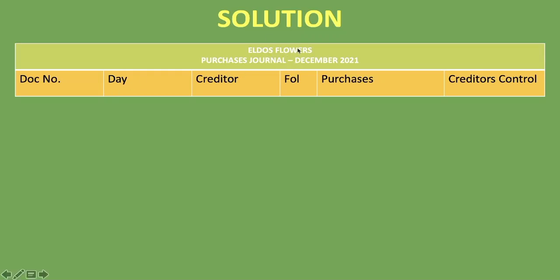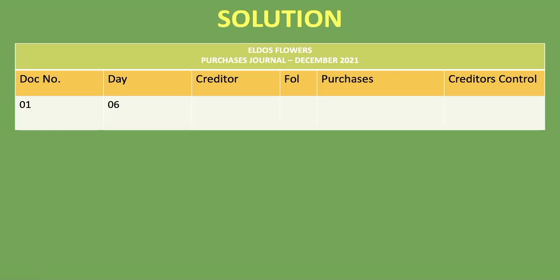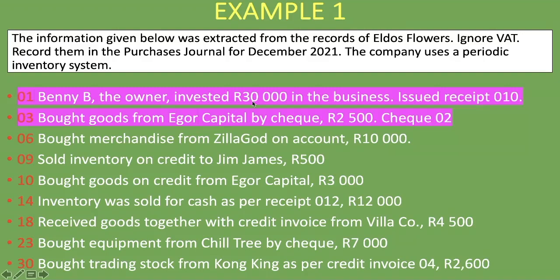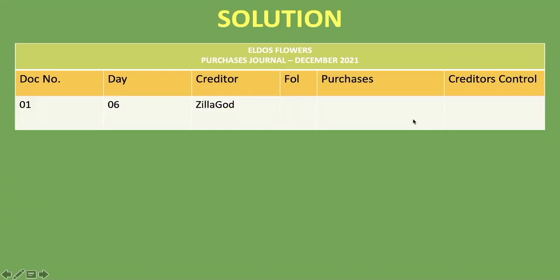In the journal: the company is Aldo's Flowers, the journal is the Purchases Journal, the period is December 2021. Document number is 01, day is 06, the creditor is Zilla God. The purchases column shows 10,000 rand — because the company uses the periodic inventory system — and the creditors control column also shows 10,000 rand.